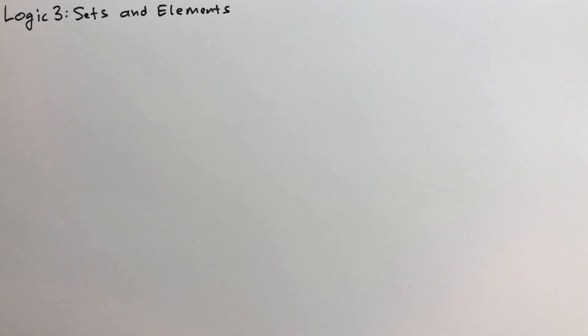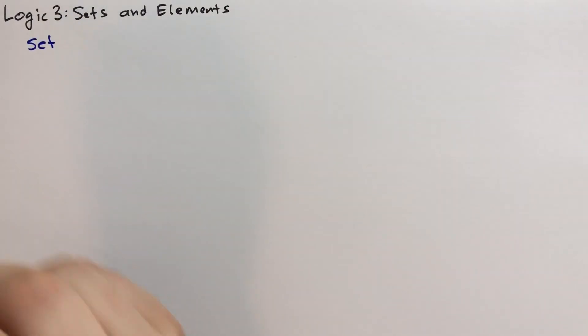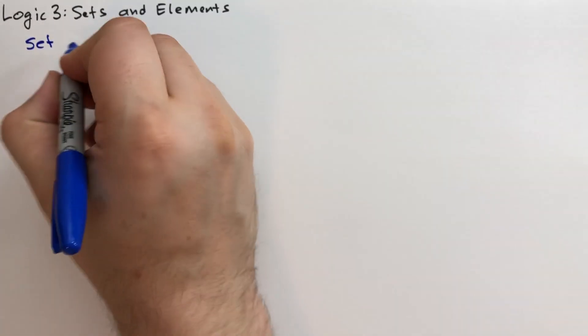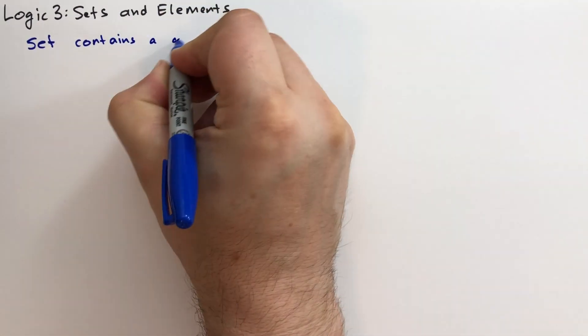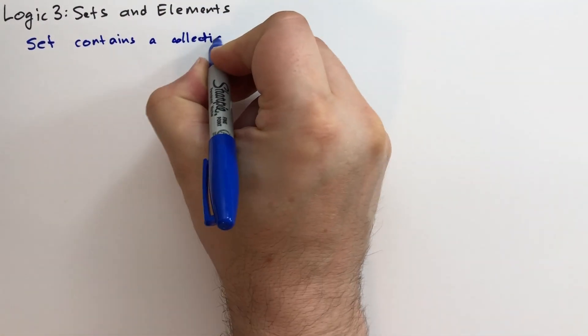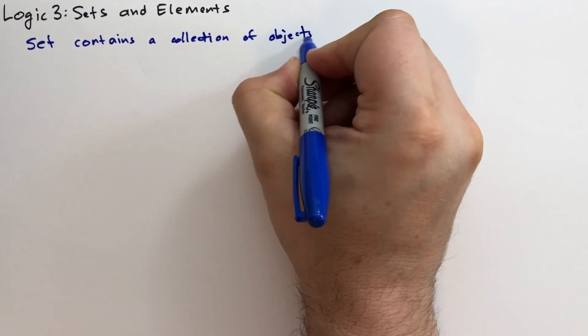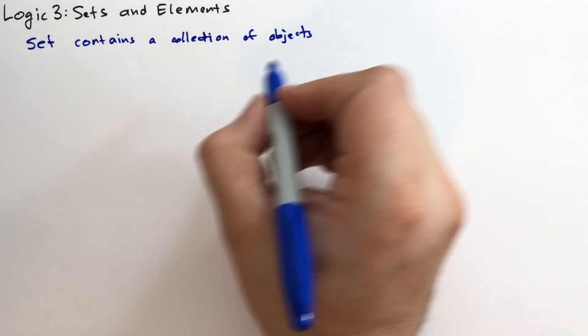So we often talk about sets in mathematics. And by sets, we mean a collection or group of things. A set contains a collection of objects. And these could be anything, though typically we're dealing with numbers, especially at this level. But in the future, we'll talk about shapes and other things, functions and things like that as well. And so these collection of objects are called elements.